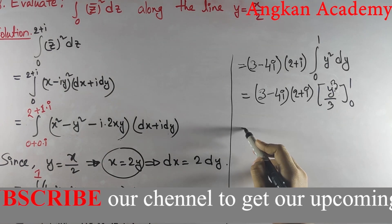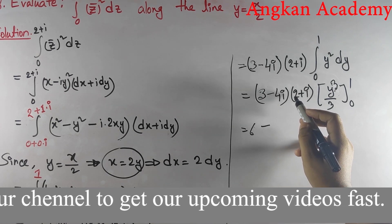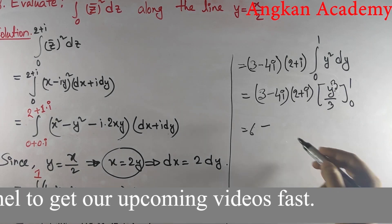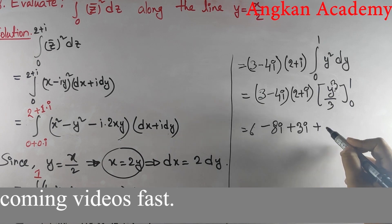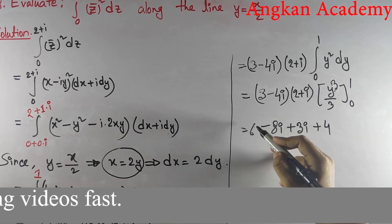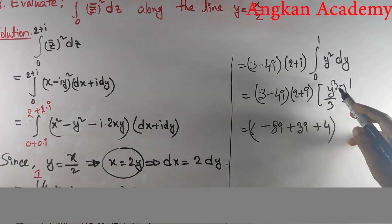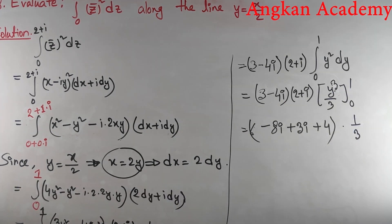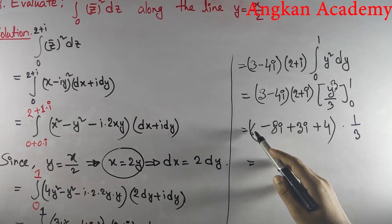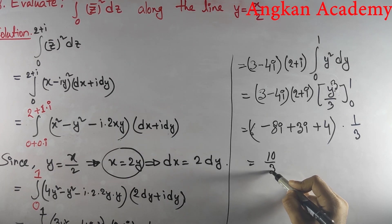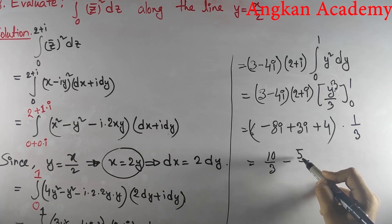Evaluating: 1³/3 − 0 = 1/3. Expanding (3 − 4i)(2 + i) gives 6 + 3i − 8i − 4i² = 6 − 5i + 4 = 10 − 11i. Multiplying by 1/3, the final answer is (10 − 11i)/3, which can be written as 10/3 − (11/3)i.